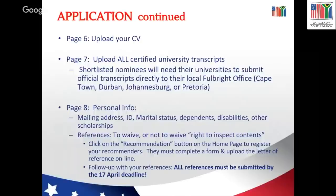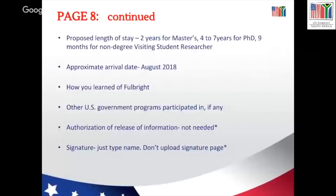A master's degree basically takes one to two years on average, and four to five years for a PhD. A non-degree visiting research program is for South Africans who are registered for a PhD at a South African university and want to go to the US to do some collaborative research in their registered field. It is highly recommended that you have completed at least two years of your PhD at the South African university before going over, and research will be at a postgraduate level in the US.